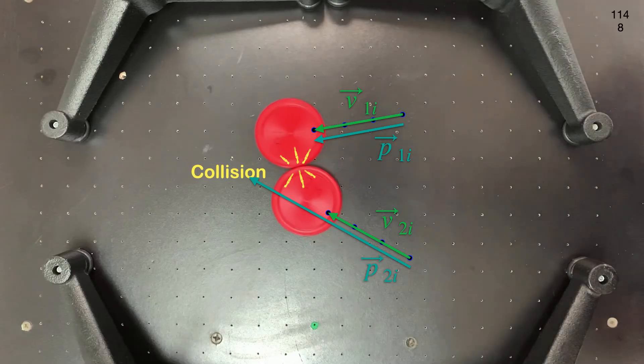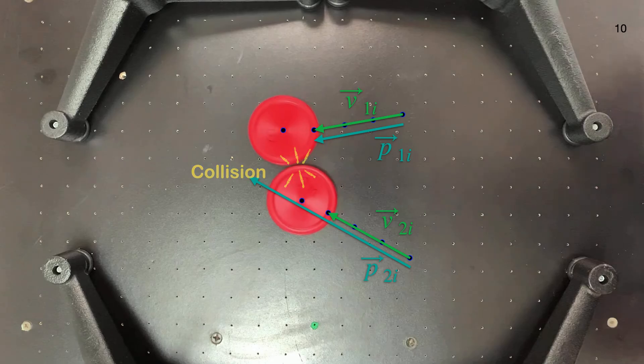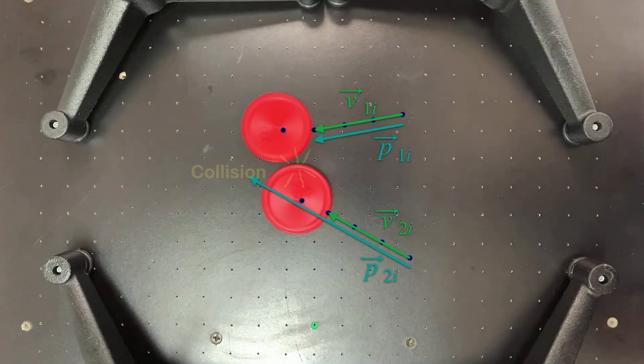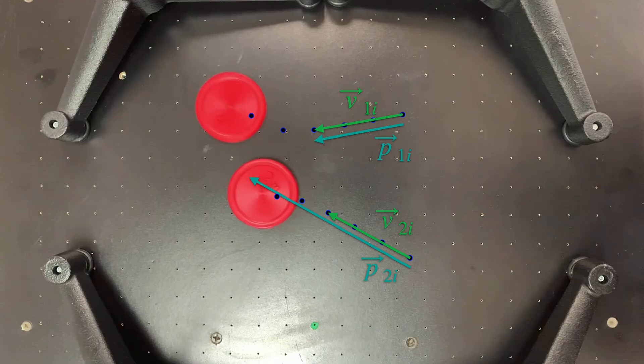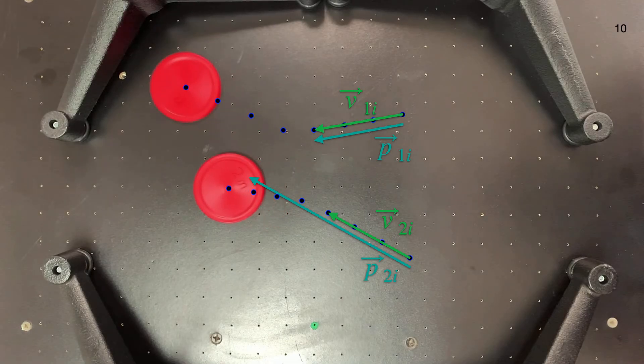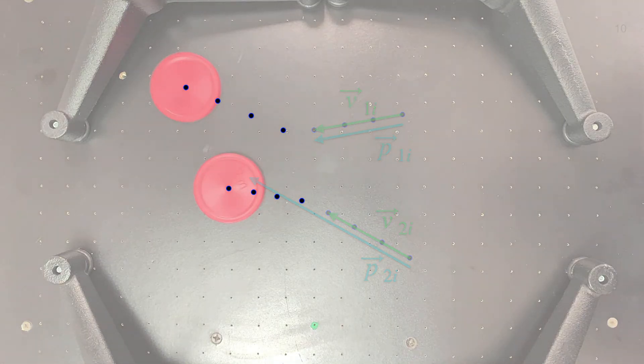And here's the collision. And a new dot after the collision, still 10 frames after the previous dot. Time for some new velocity and momentum vectors.